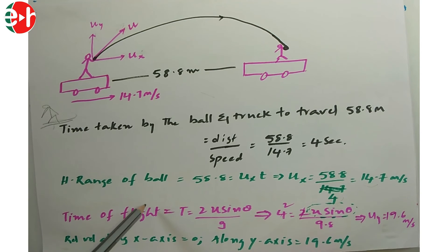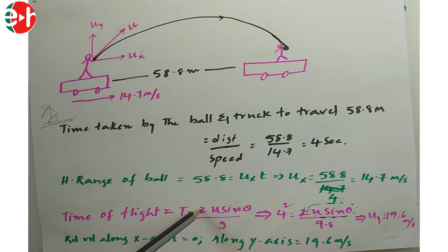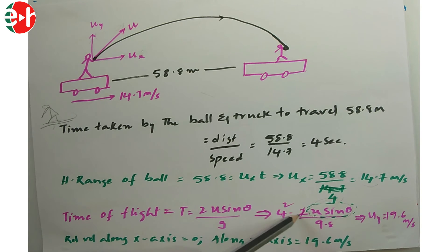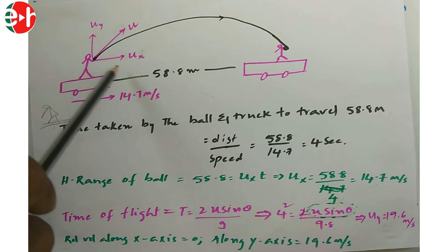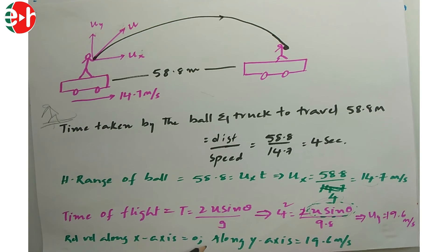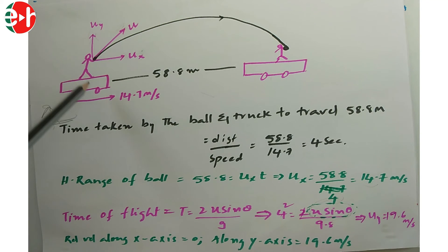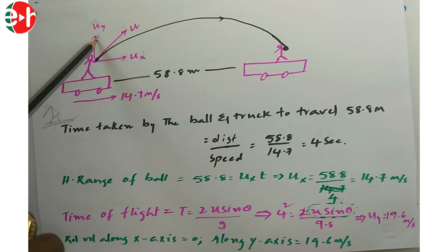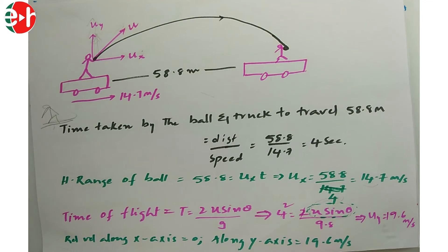Time of flight t = 2u·sinθ/g. With t = 4 s and g = 9.8: 4 = 2·u·sinθ/9.8, giving the vertical component Uy = u·sinθ = 19.6 m/s. The relative velocity of the ball along x-axis with respect to the boy on the trolley is Ux(ball) − Ux(trolley) = 14.7 − 14.7 = 0. The velocity along y-axis relative to the trolley boy = 19.6 m/s.